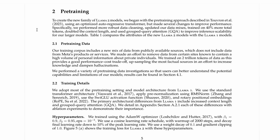Looking at the training, they trained on 2 trillion tokens and made interesting decisions about data sources. The majority of the data comes from the internet, but they removed data from sites known to contain high volumes of personal information about private individuals. They also up-sampled the most factual sources in an effort to increase knowledge and dampen hallucinations — so Wikipedia is probably up-sampled more than conspiracy forums — and this is all in the base model pre-training.